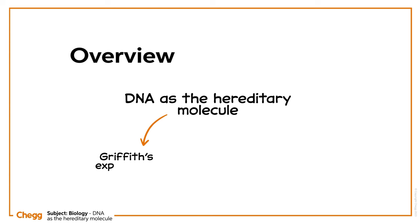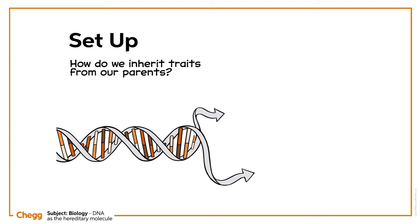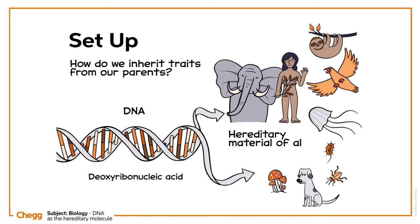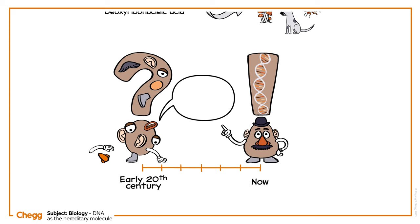In this video, we'll talk about Griffith's experiment and how it contributed to our understanding of heredity. How do we inherit traits from our parents? It's a question that long perplexed scientists until the answer was eventually found in deoxyribonucleic acid, aka DNA. We now know that DNA is the hereditary material of all living organisms, but we're casting our minds back to the early 20th century, a time when even the best educated scientists couldn't identify the mysterious hereditary material.